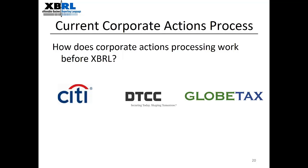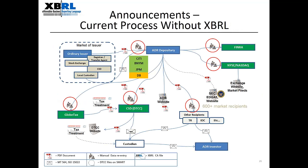Now we'll hear about the current process from DTC, from Globetax, and first from Citi. The flow chart shows that the dividend announcement starts at one of the ADR depositories — Citi, Bank of New York Mellon, JPMorgan, or Deutsche Bank. At Citi, we house dividend record and payable dates on our mainframe computer. We built a web-based tool which extracts the dividend dates and rates and creates PDF announcements. Once checked and approved, the system generates an email with an embedded PDF.